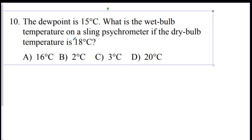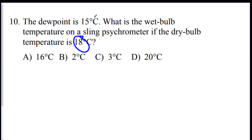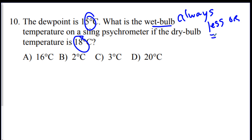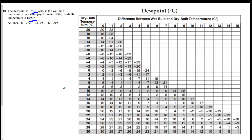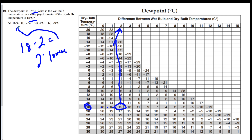Number ten: dew point question — the dew point is 15°C, what is the wet bulb temperature if the dry bulb is 18°C? The wet bulb is always less than or equal to the dry bulb because evaporation cools it. On the dew point chart at dry bulb 18°C, go across until you hit dew point 15 — the difference is 2. So the wet bulb is 2 degrees lower than the dry bulb: 18 minus 2 equals 16°C.